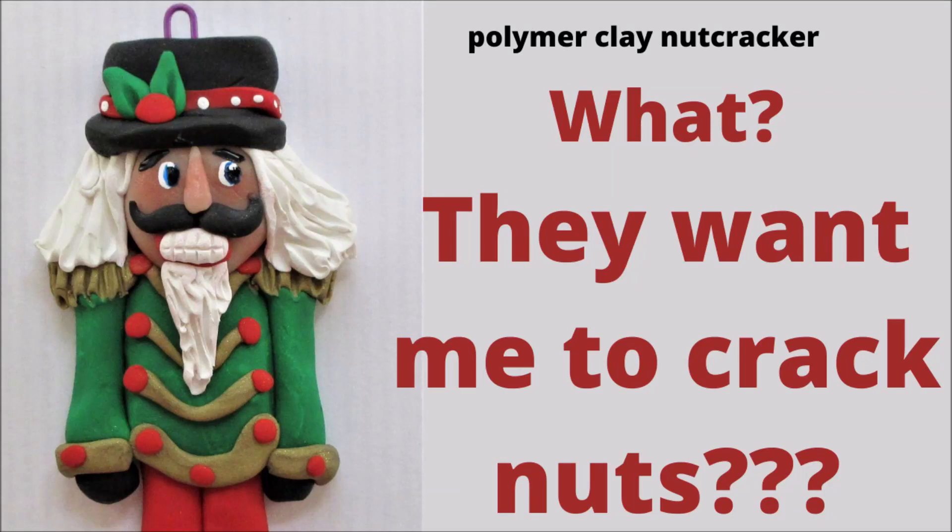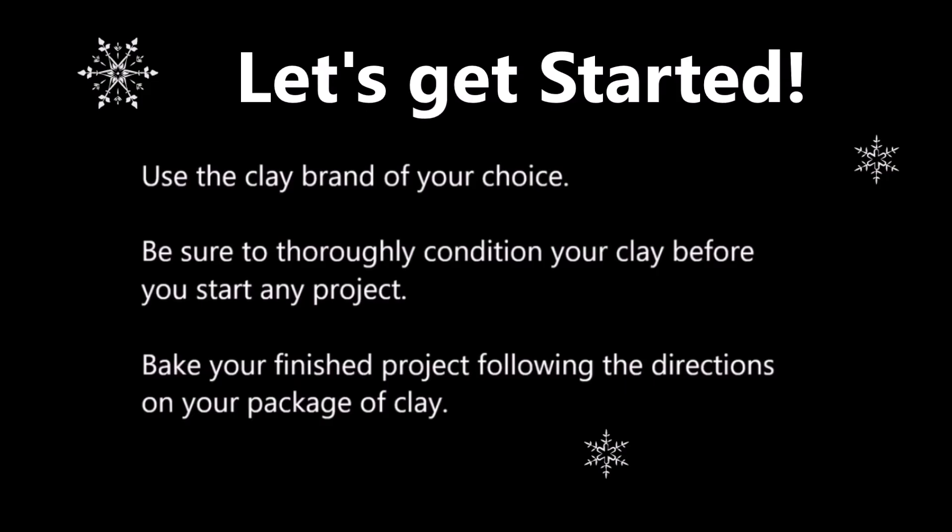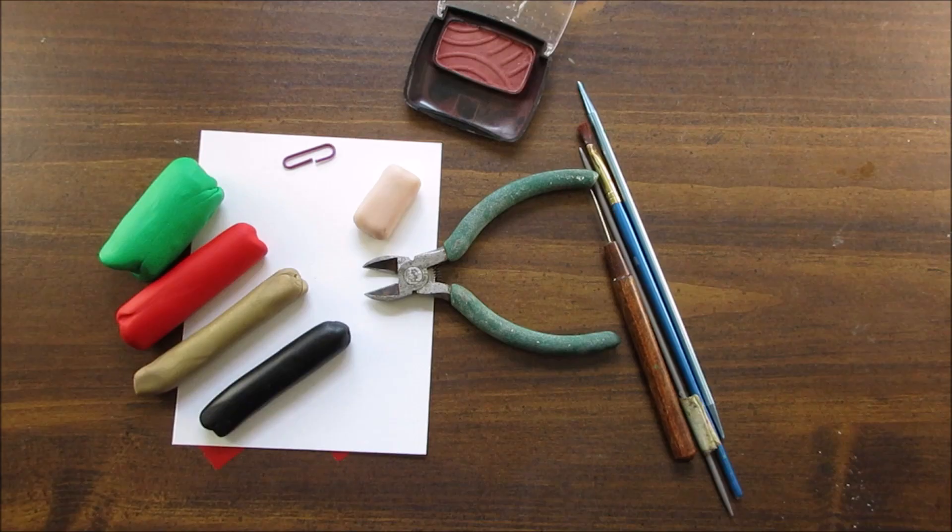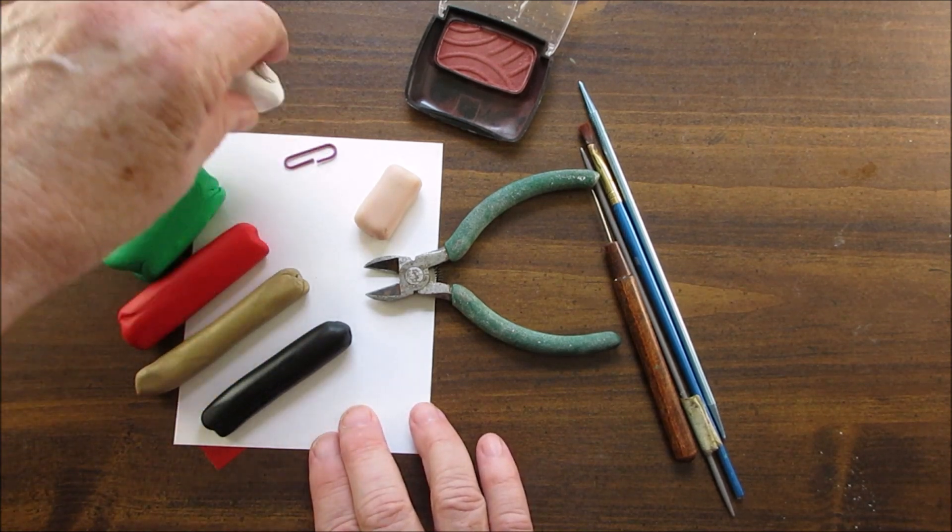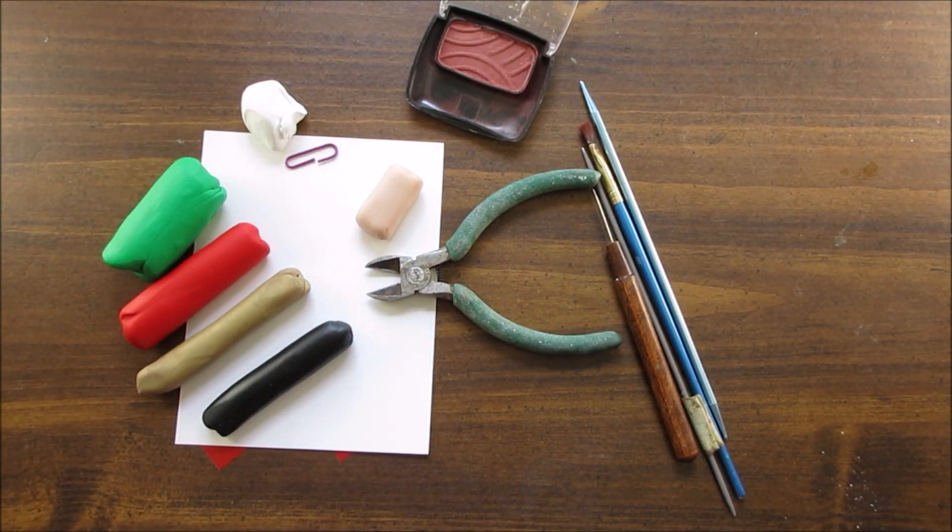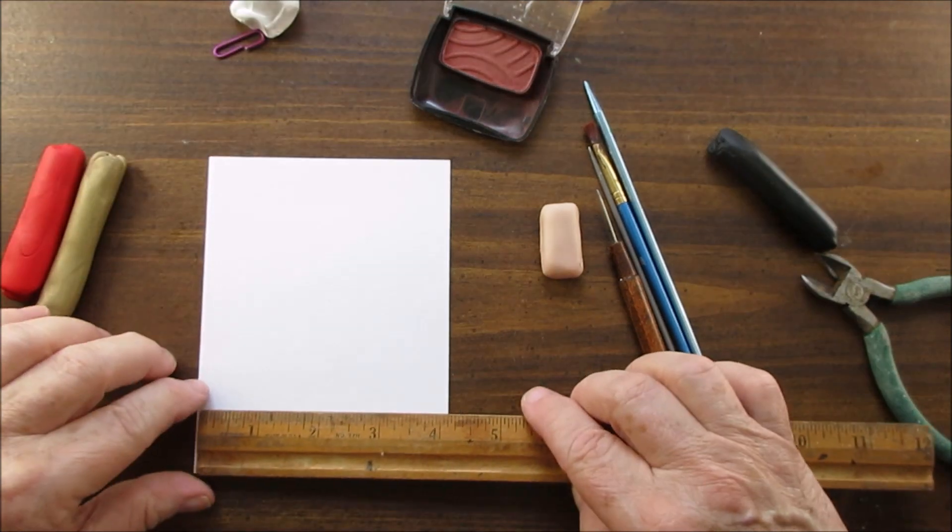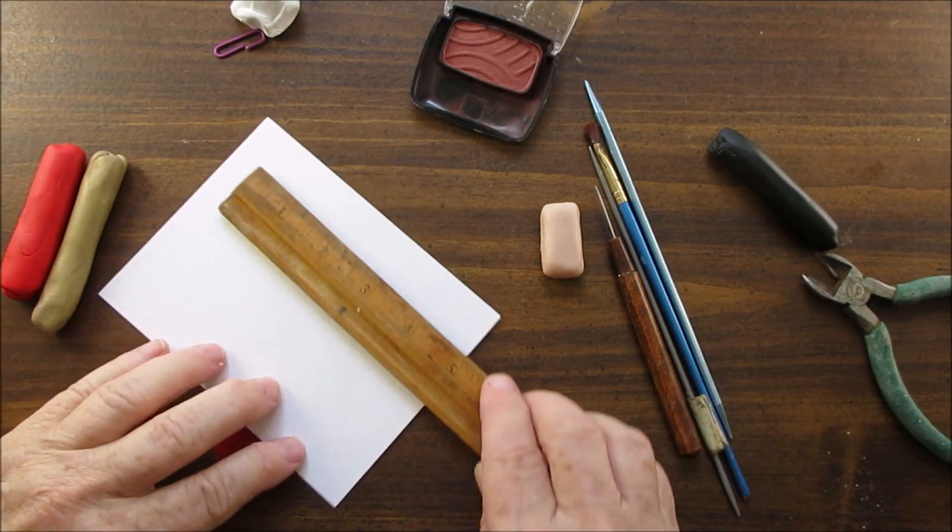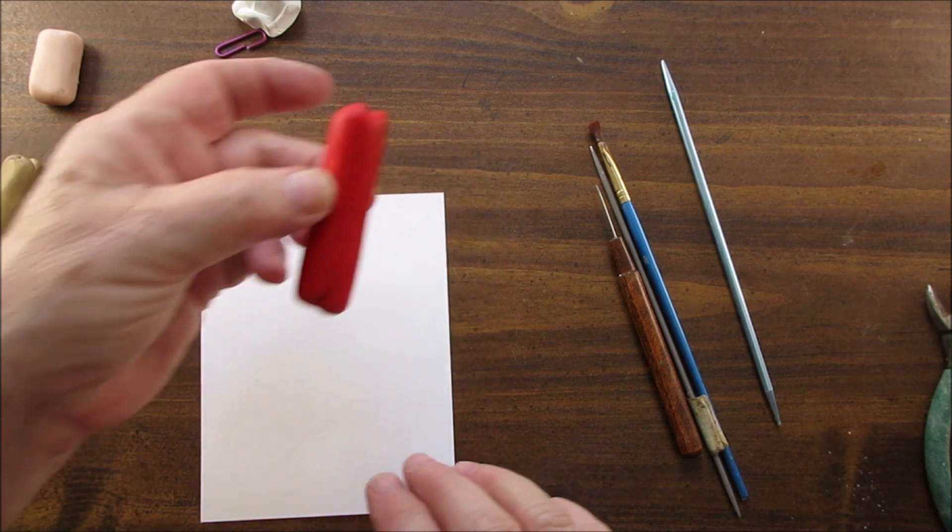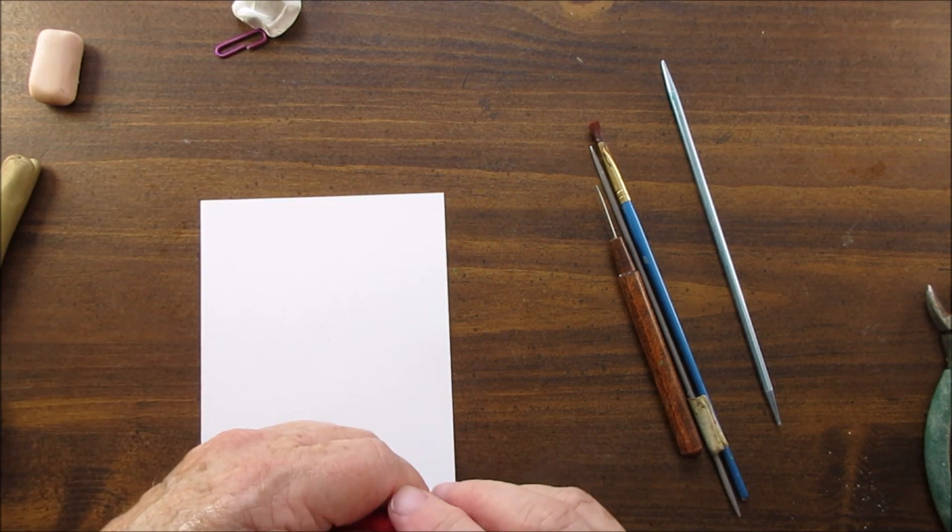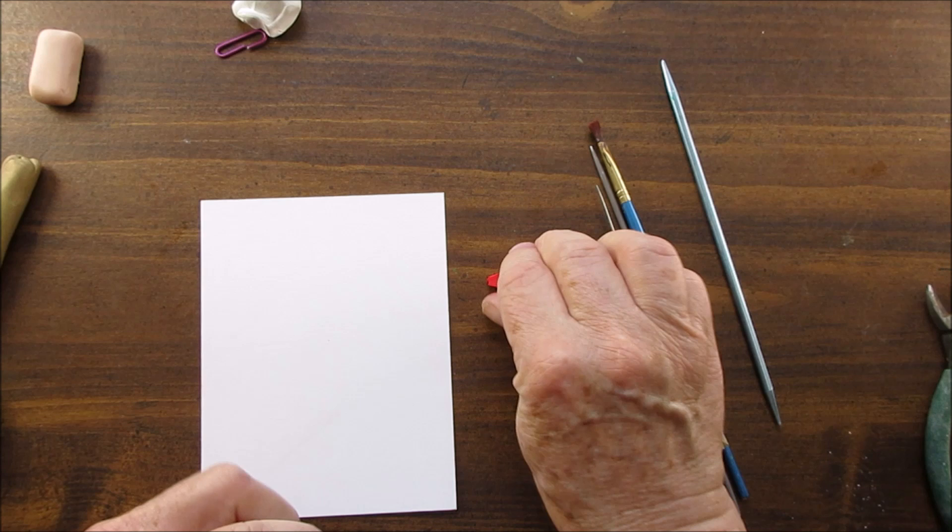Hi everybody, today we're going to make a nutcracker. When my son was little he collected nutcrackers, mostly from the cheap dollar store. I'm using red, green, gold, black, beige, and white on a four by five sheet of paper.